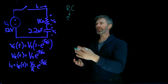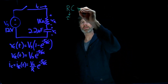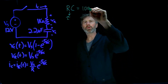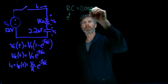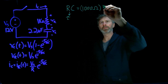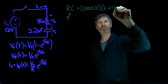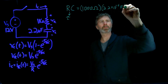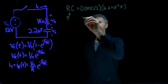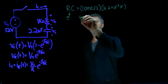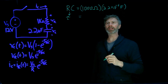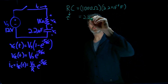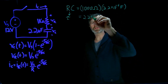Let's use this example here. R times C for this example will be a thousand ohms times 2.2 times 10 to the minus 6 farads. As a number, a thousand times 2.2 times 10 to the minus 6 is going to be 2.2 times 10 to the minus 3.